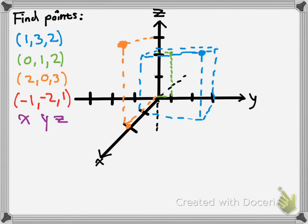I'll just make the points bigger here. Then we have our final point: negative 1, negative 2, 1. So negative 1 is here. Negative 2 would be back there — I didn't mark it there, so back there. And then up 1. That's an interesting one. Let's say it's here — so we went this way, making a little cube. So there's the point, right there. It's behind the z-axis, sort of, and into the page.